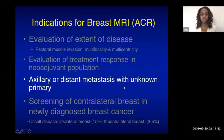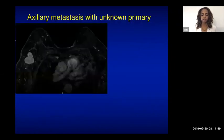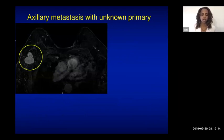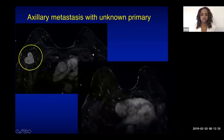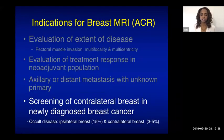Another indication is to evaluate axillary or distant metastasis with unknown primary. If a patient presents with axillary lymphadenopathy but no primary is identified on mammography or ultrasound, MRI can problem-solve. In one example, MRI found a tiny focus of IDC that was then biopsied under MR-guided biopsy.